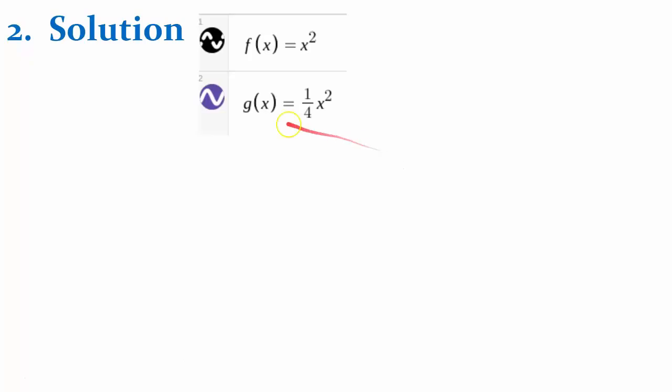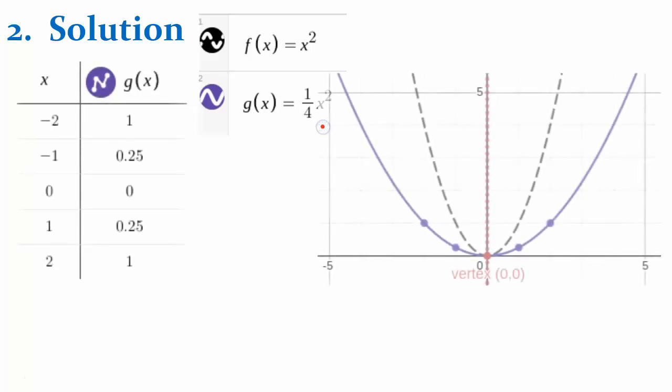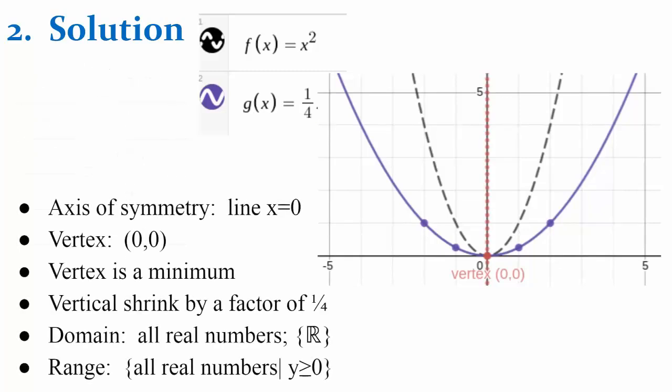The solution for number two for the function g, one-fourth x squared. Create your table of values. Plot your points. And compare. This one's a vertical shrink by a factor of one-fourth. Our vertex is still a minimum.